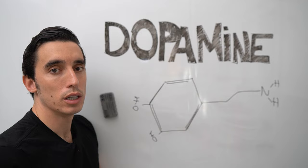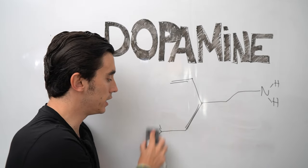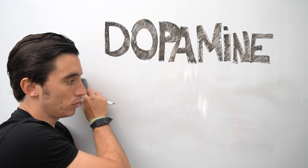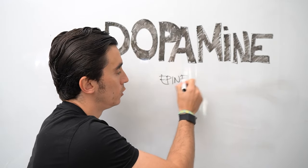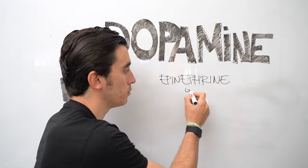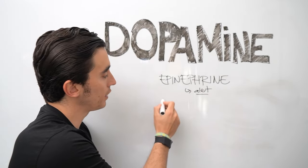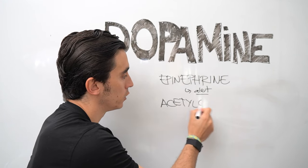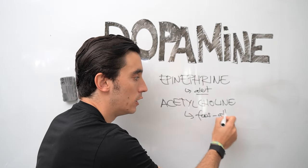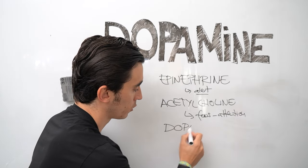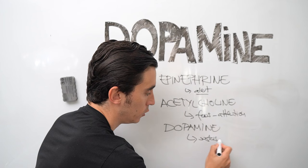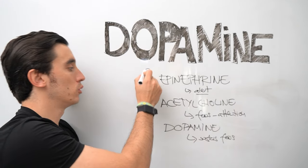And this neurochemical is very important in focus, because focus requires three specific neurochemicals. First, you need epinephrine. It's another neurotransmitter for alertness. This makes you alert. Then we have acetylcholine, which is what triggers focus and attention. And finally we have dopamine, and this is what sustains focus. This is what makes you focus.